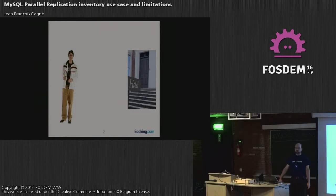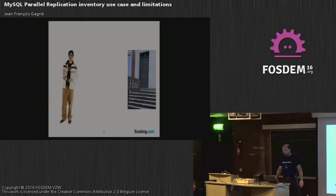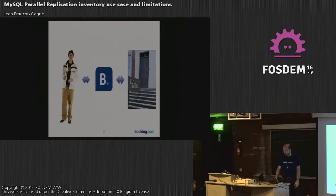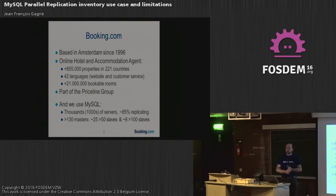Booking.com, just a few words. Some people want to stay in a hotel, and there are some hotels that want people to stay at their place. Booking.com is in the middle — we link guests to hotels. We're pretty big, worldwide, with a lot of properties. The number was released some time ago: 21 million bookable rooms on the website.